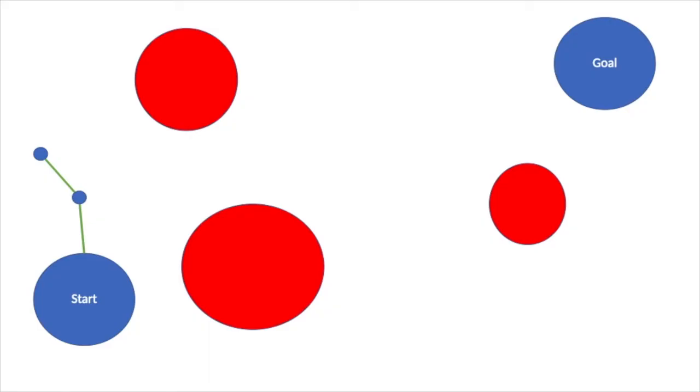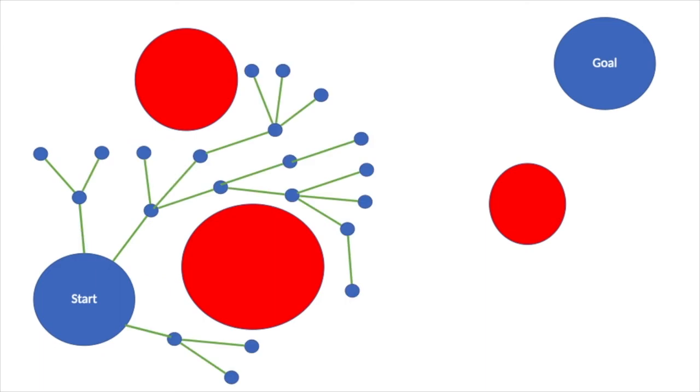RRT Star works very similarly to RRT but it has a few key modifications. When a point is added the nearest neighbor is located. Then within a certain radius neighboring points are checked. If a neighboring point results in a shorter path to the start node that point is used as this node's parent. This results in many fan-like structures throughout the tree.